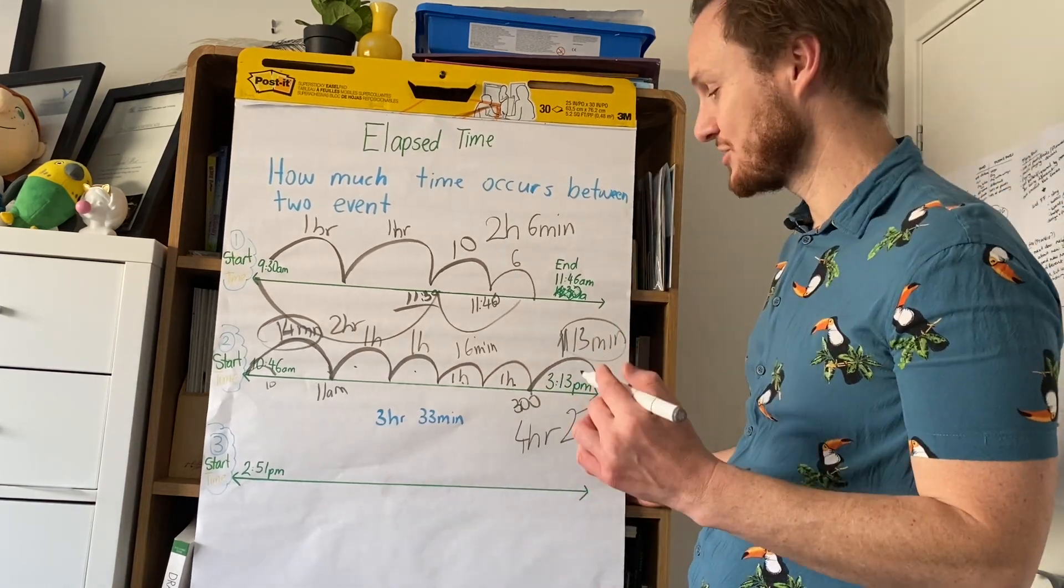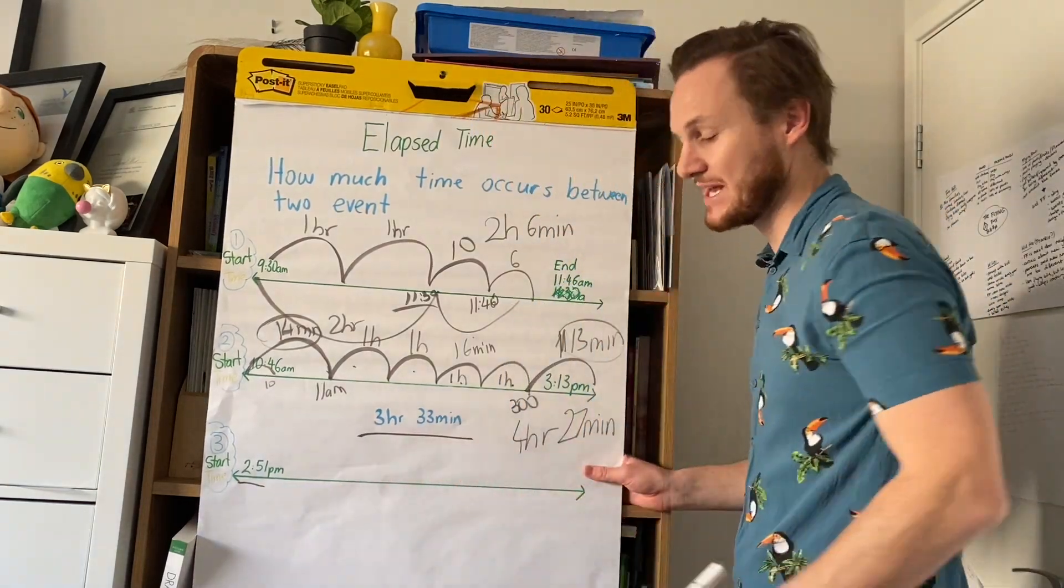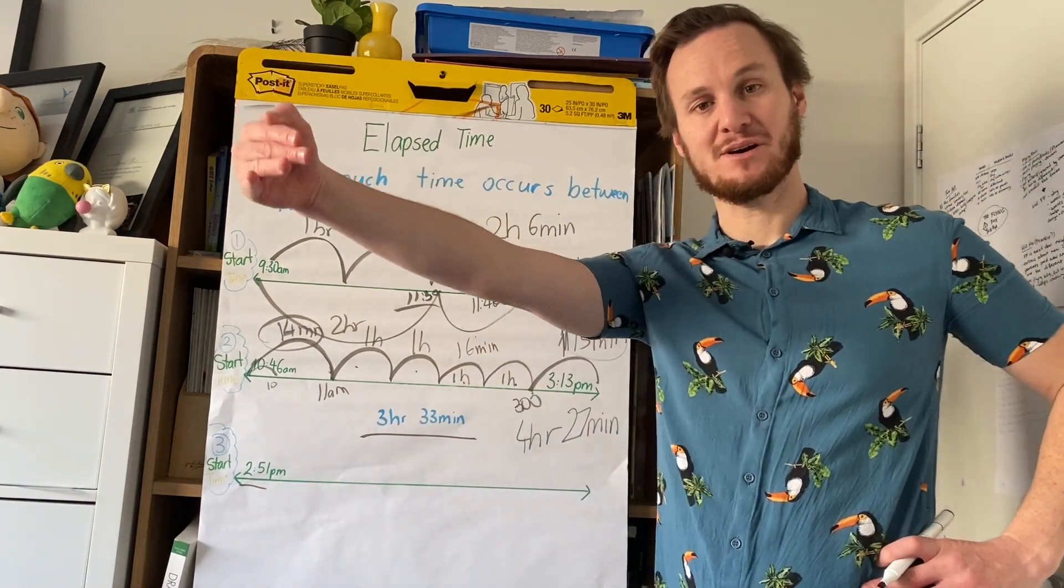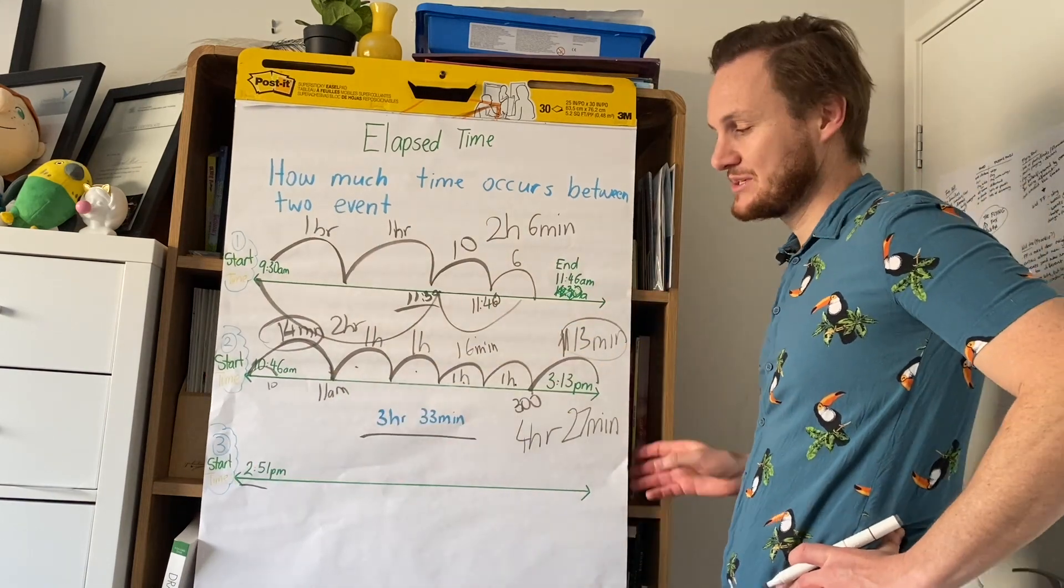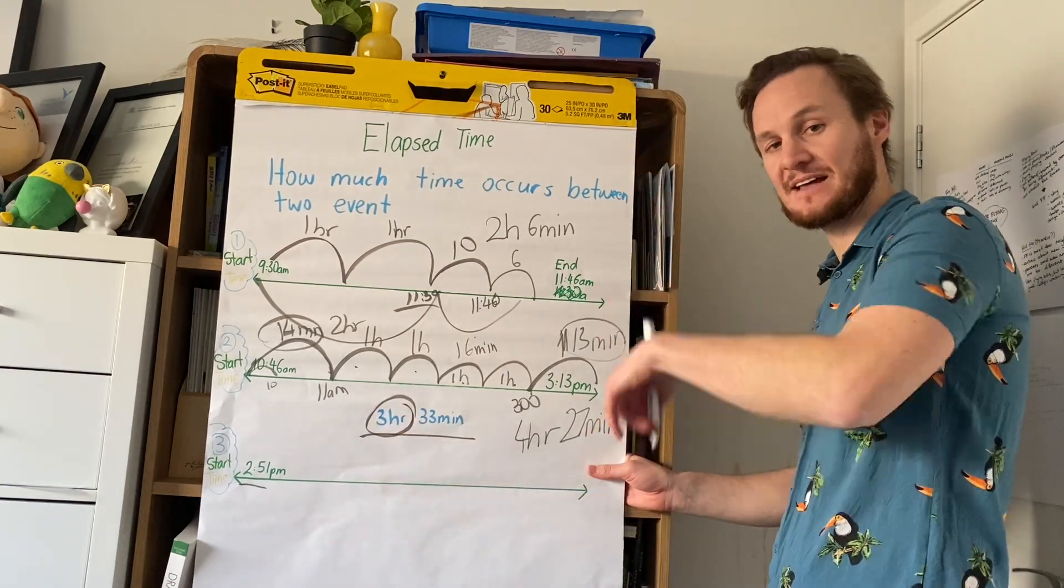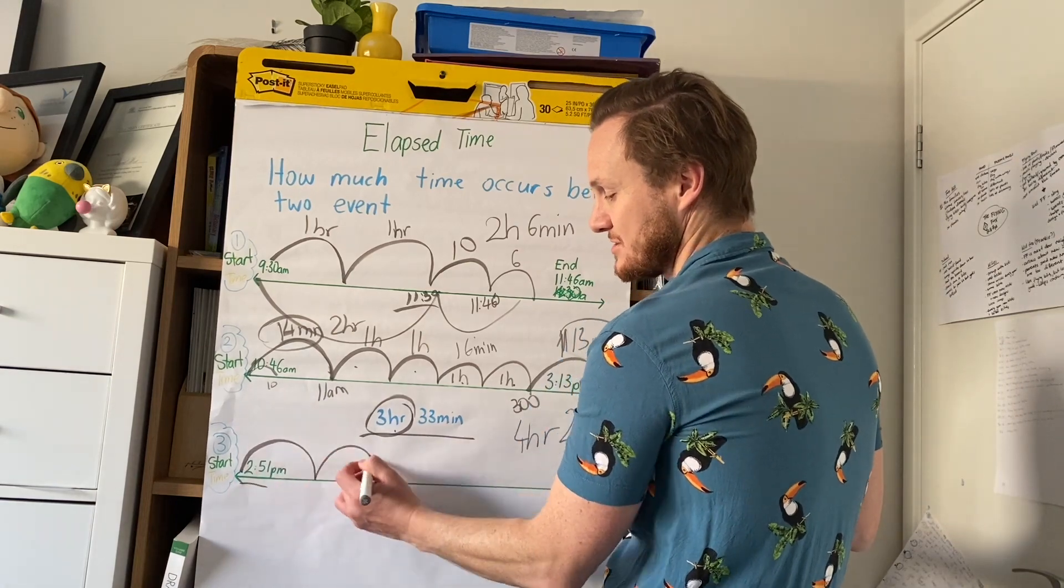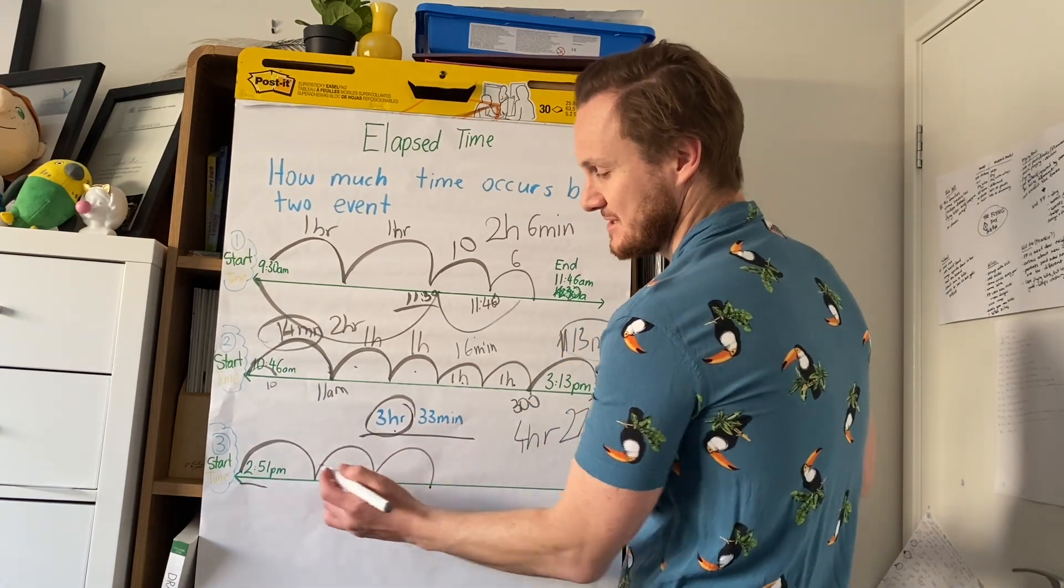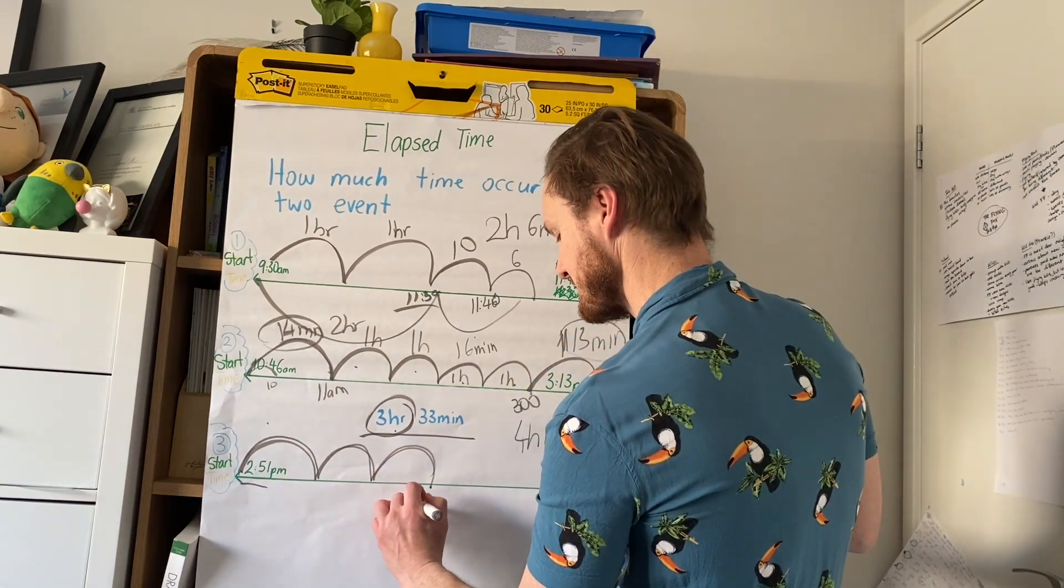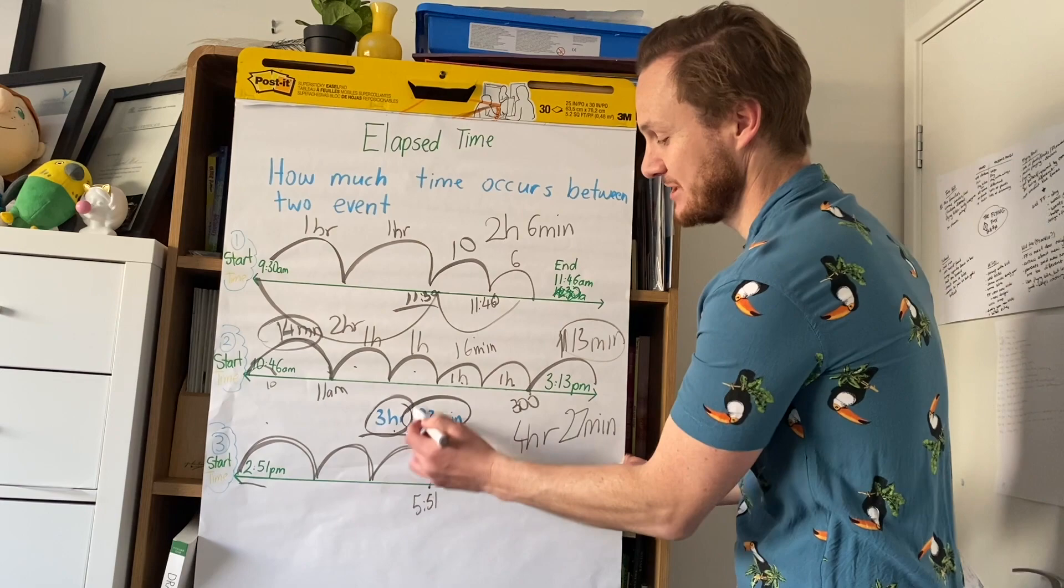The next one, what I want to do is I want to say there's no end point. Someone says the party started at 2:51 and it went for 3 hours and 33 minutes. What time did it finish? When it has to jump to the next hour, it's really difficult. So what you might want to do first is you might want to just go forward the, count the 3 hours forward first and then count the 33 minutes. So you've got 2:51. So you can go, I've got to go 3 forward. So you go 1, 2, 3 hours. So that's 3:51, 4:51, 5:51.